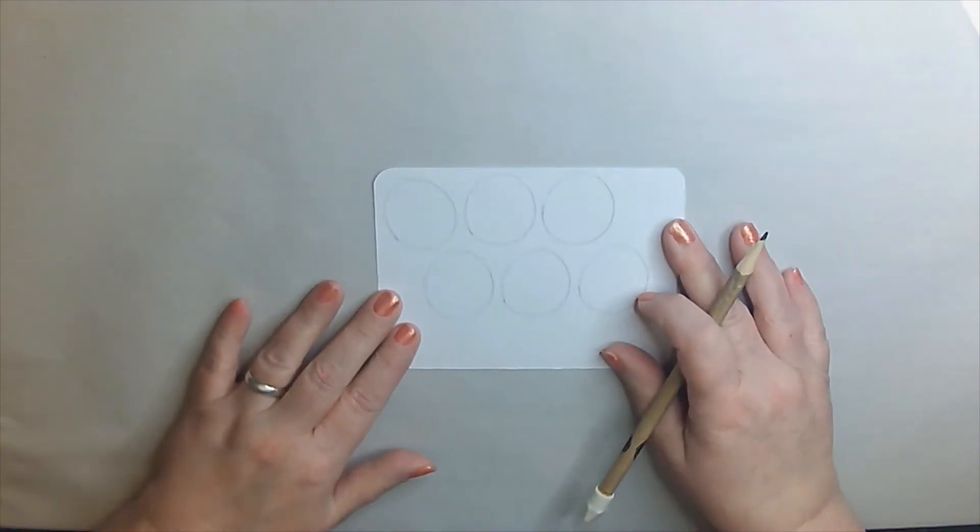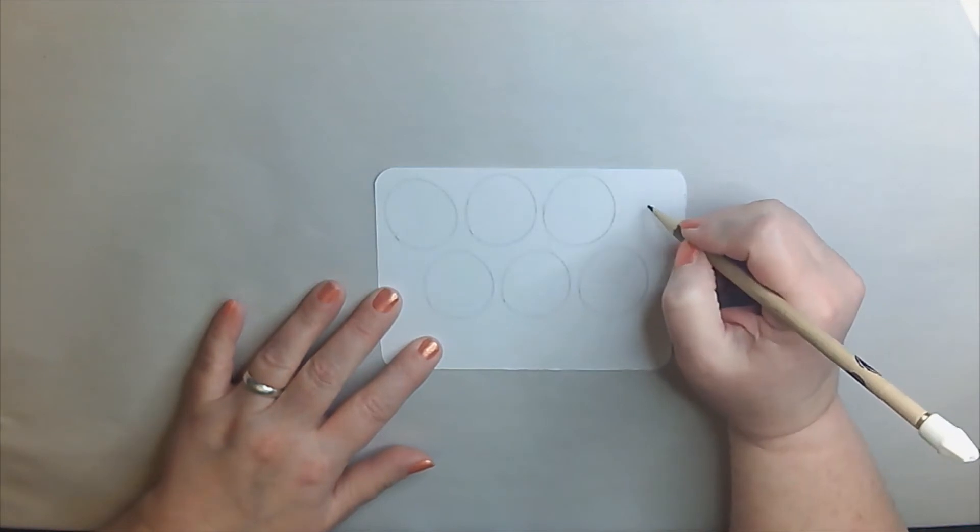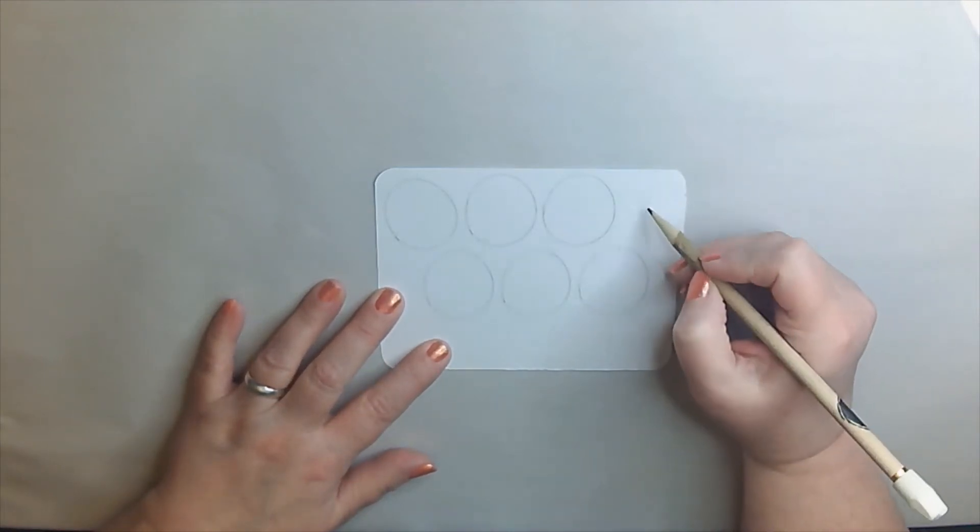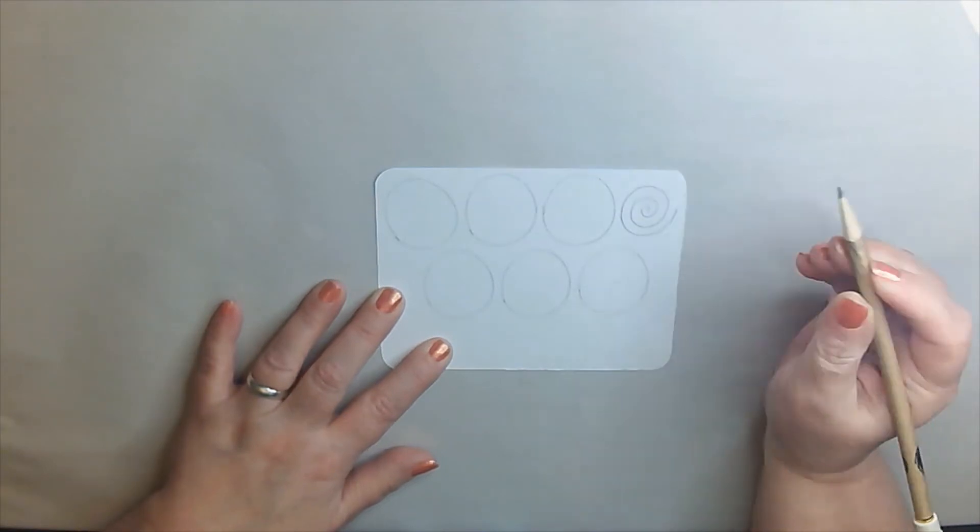Once you have it to this point, we're going to just do this design today. And I'm going to go ahead and show you. We're going to show it over here without the circle. And you're just going to make a circle, making a swirly mark all the way around. That's it.